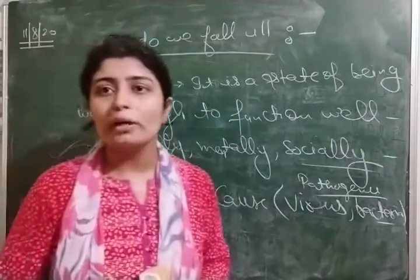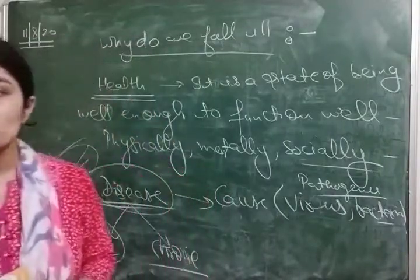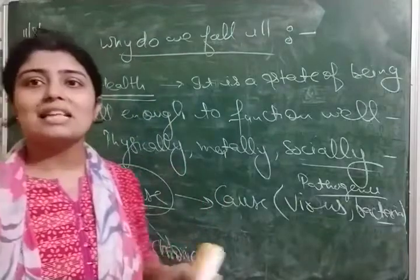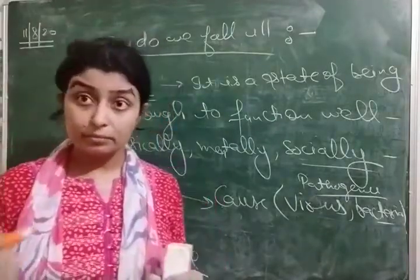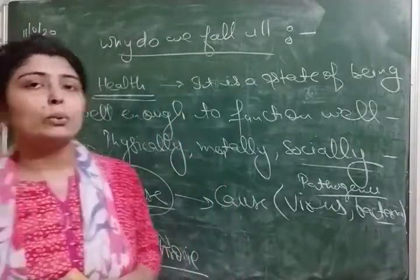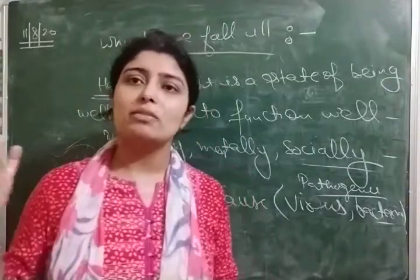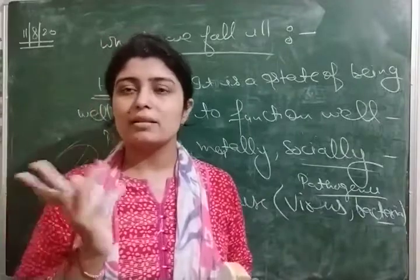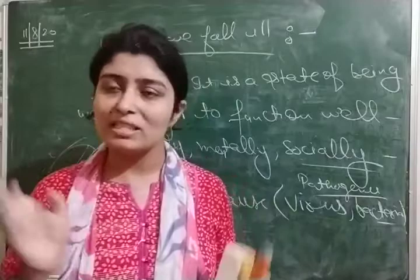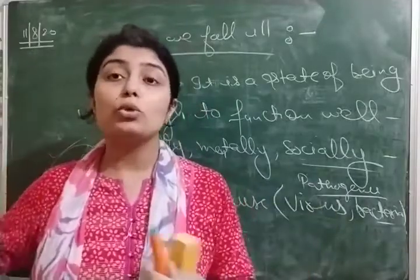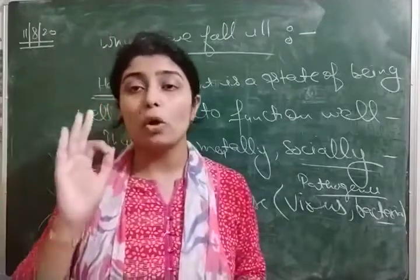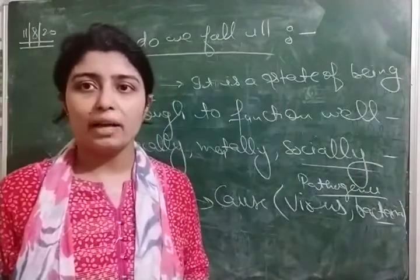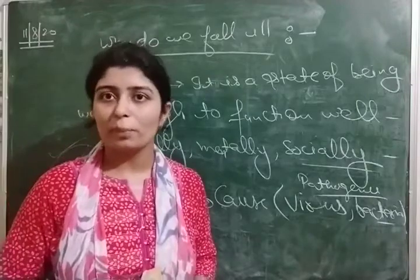A good economic condition includes job opportunity for earning enough to have nutritive food and lead a better life. To maintain good health, at least two things are necessary: good physical and social environment, and good economic condition. So students, today we covered the definitions of health and disease, and how to maintain good health. In the next class, we will discuss the remaining topics of this chapter.